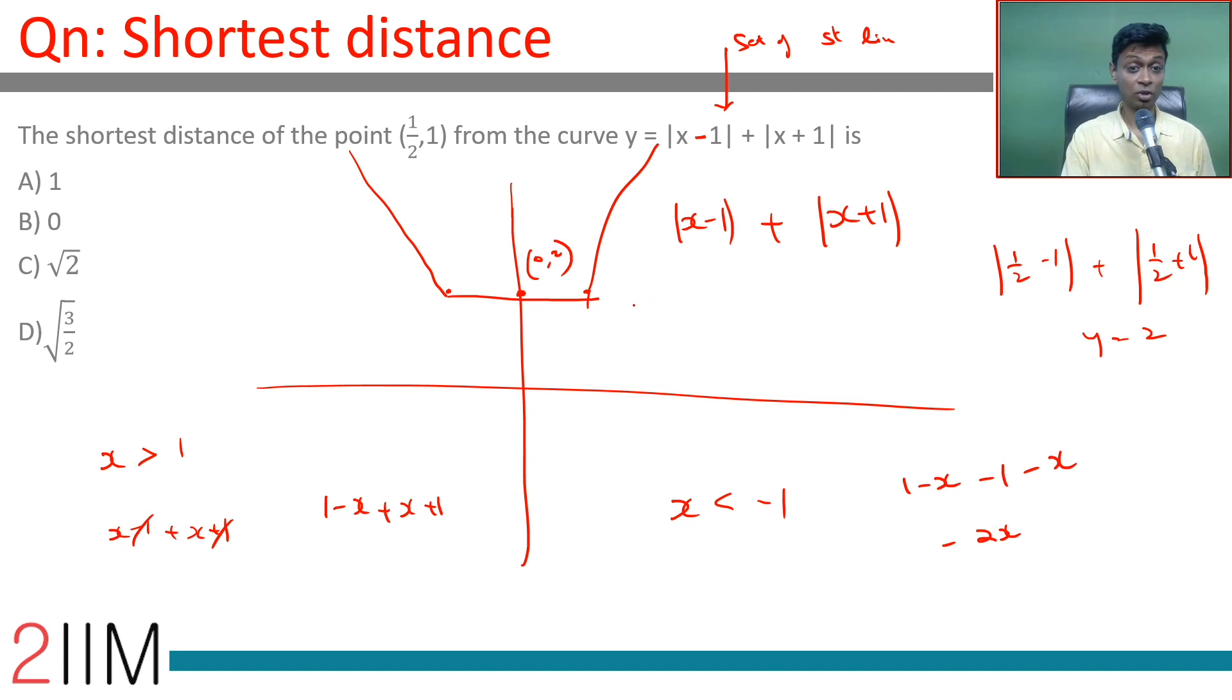The curve looks like this: it's 2 from -1 to 1, then a line with slope 2 here and slope -2 here. You're looking at point (1/2, 1), so the shortest distance will be this perpendicular distance, which is 1 unit.